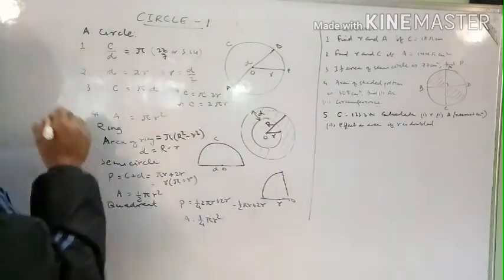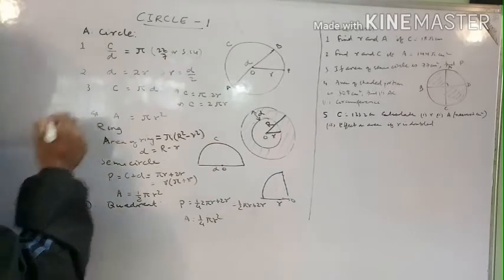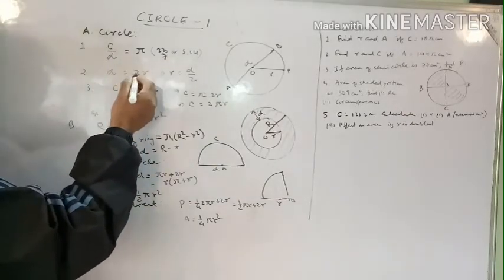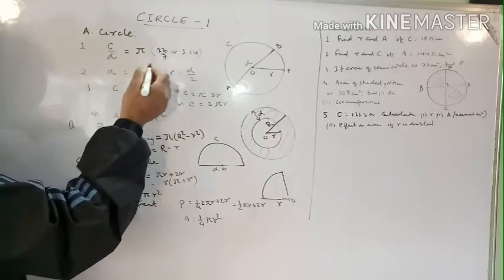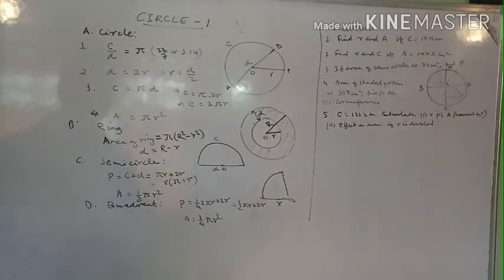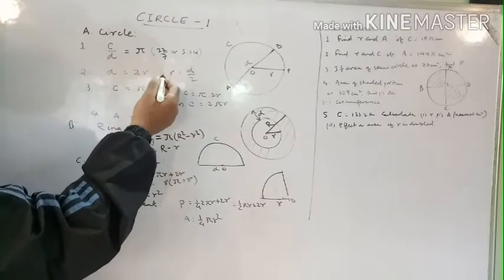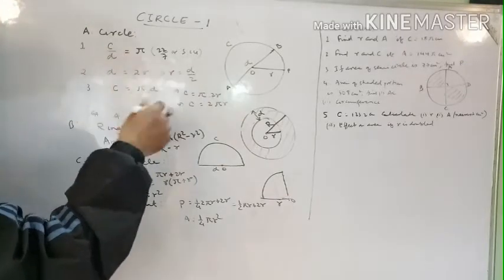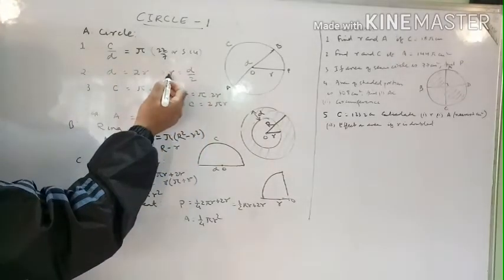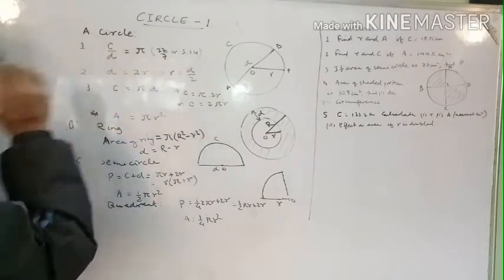Diameter is radius plus radius, that is 2r. So d equals 2r, meaning diameter is double the radius, and radius is half of diameter: r equals d/2. If you know the diameter you can find the radius, and if you know the radius you can find the diameter.